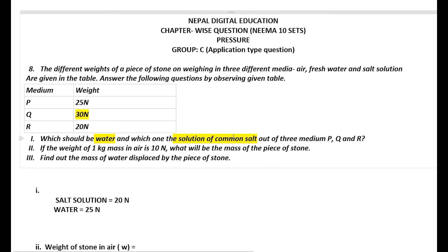Since air has no upthrust, Q = 30 N is the air medium and represents the true weight of the stone. In common salt and water, both experience upthrust, but the density of common salt solution is more than the density of water, so the object experiences more upthrust in salt solution and therefore weighs less in it. So R = 20 N is the common salt medium and P = 25 N is the water medium.